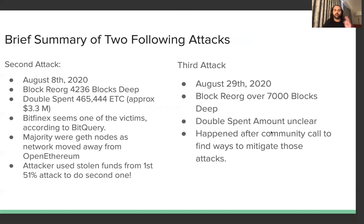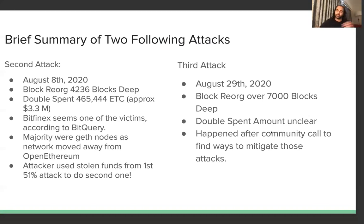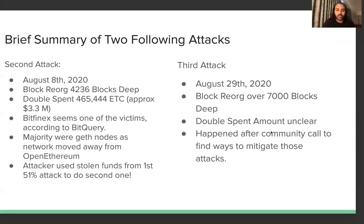For the two following attacks: the second attack occurred on August 8th, 2020, with a block reorg of 4,236 blocks. The double spend amount was 465,000 ETC — about 3.3 million dollars. Bitfinex was one of the victims, as the attacker distributed funds to multiple exchanges and accounts. By this point, the majority of the network had moved from OpenEthereum to Geth, so there was no second chain split. Notably, the attacker used stolen funds from the first attack to finance the second.